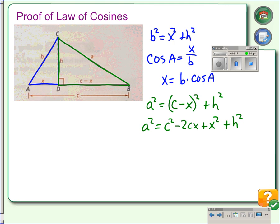Okay, we should notice at this point that we have x squared plus h squared is equal to b squared from our first triangle. So we're going to substitute x squared plus h squared for b squared. So we're going to have a squared equals c squared minus 2cx plus b squared. Simple substitution.